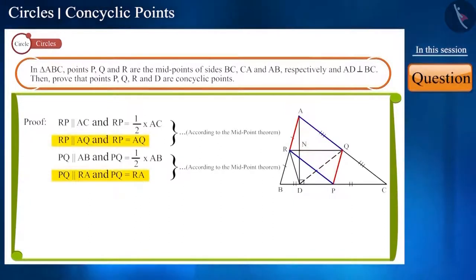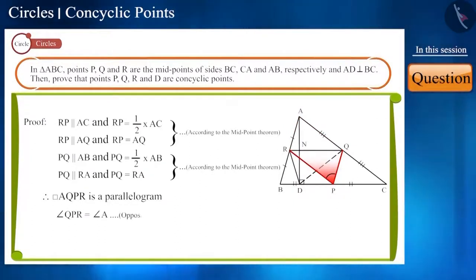The opposite sides of the quadrilateral AQPR are equal and parallel. Therefore, it will be a parallelogram. Opposite angles of a parallelogram are equal. Therefore, angle QPR and angle A will be equal. Let's call it equation 1.